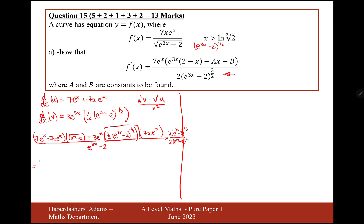On the first term, the 2 is going to turn the 7s into 14: 14e to the x plus 14xe to the x. And then the e to the 3x minus 2 to the power of a half simplifies with the other e to the 3x minus 2 to the power of a half to give e to the 3x minus 2. For the second part, it's going to cancel out, becoming 21xe to the 4x over 2 brackets e to the 3x minus 2 to the power of a half.